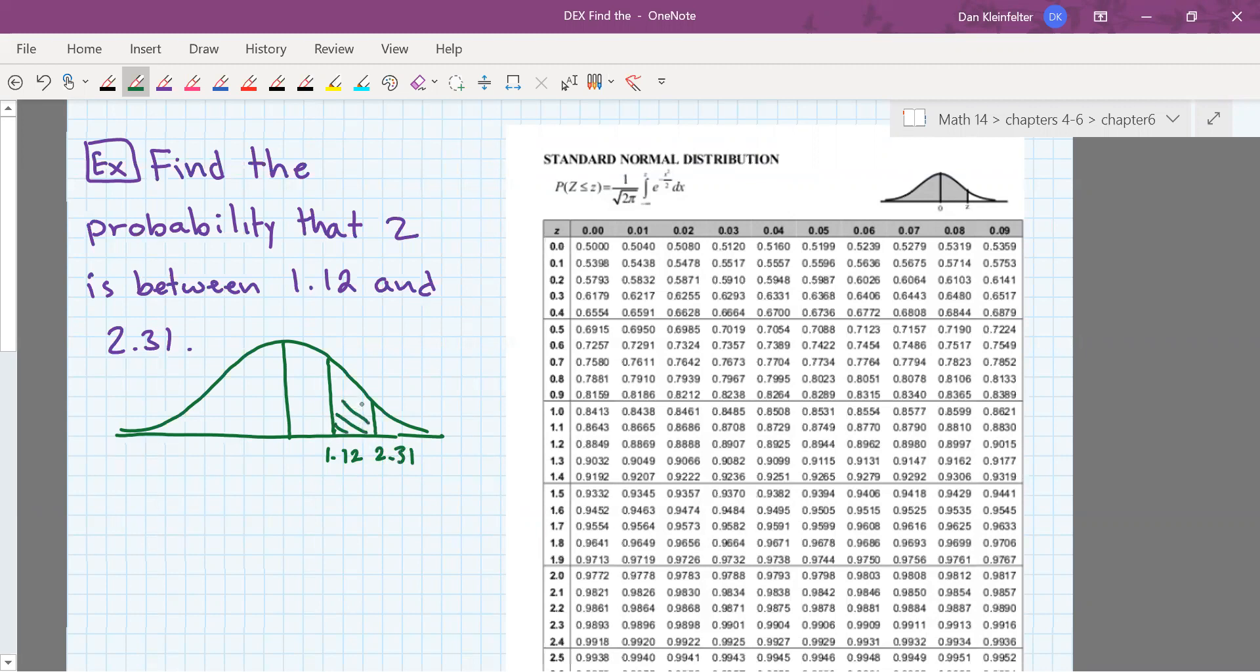So what we want is that strip between 1.12 and 2.31. Our table tells us areas from negative infinity up to a certain point, and so we'll have to use two separate table lookups to help us get this done.